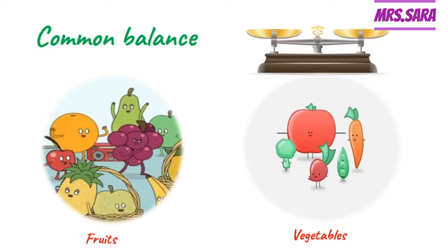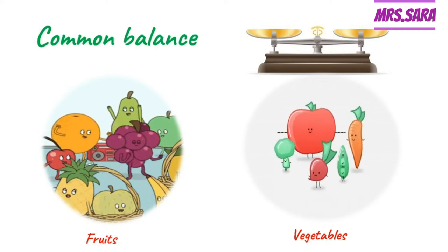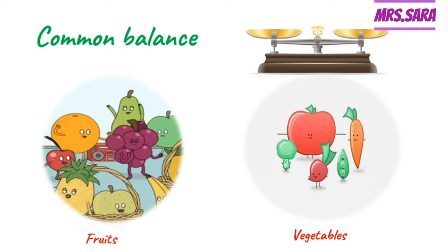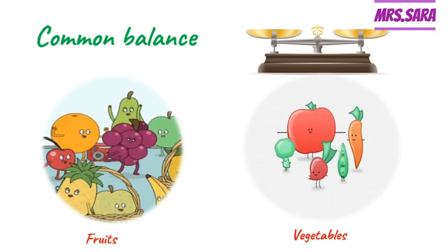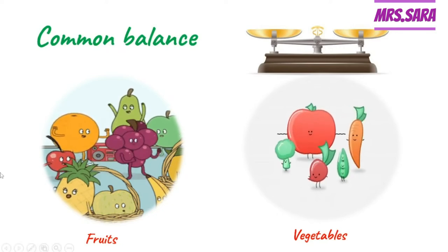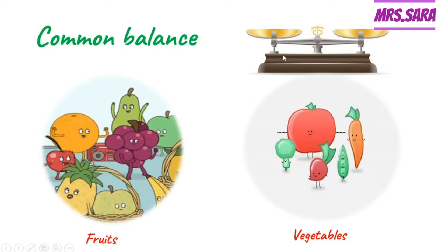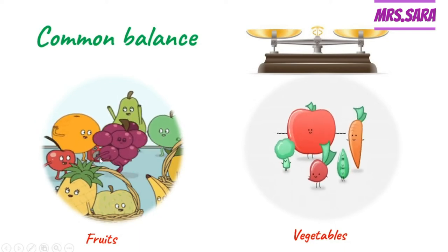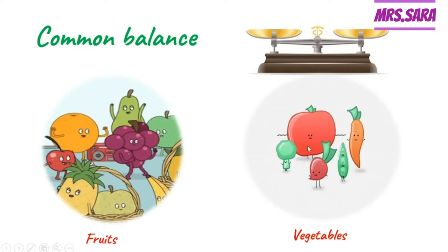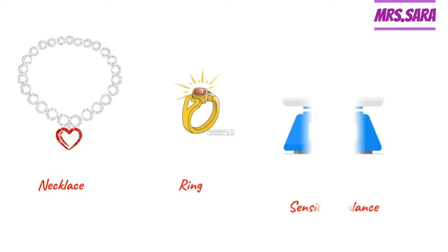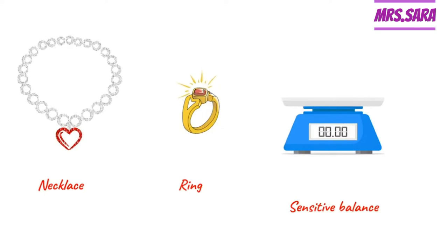We need a measuring tool for big mass and a measuring tool for small mass, so we have here two balances. For big masses, we have the common balance — we use the common balance for fruit and vegetables or for big masses. For small masses like necklace or ring, we use another type of balance called the sensitive balance.